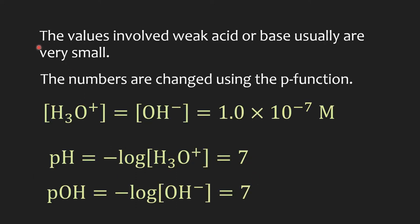We need to learn about the P function because normally the values that involve weak acid or base, as you may have already seen, are usually very small. The numbers are changed using the P function to make them easier to read and compare. In a neutral solution like water, for example, we know that hydronium concentration equals hydroxide concentration, and that is 1.0 times 10 to the minus seven molar.